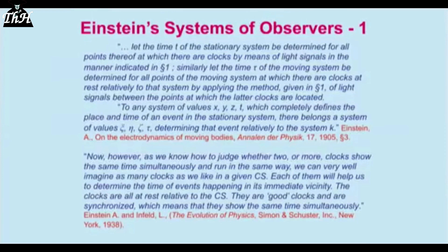Einstein says: 'Let the time T of the stationary system be determined for all points thereof at which there are clocks, by means of light signals in the manner indicated in section one.' He then has a second, moving system. He synchronizes clocks in each system independently using the same light-signal method. All of this long-winded description simply means: everyone in the room has a watch, they're all synchronized to read the same time. But you've got two systems — one stationary, one moving — with different coordinate labels and time symbols.